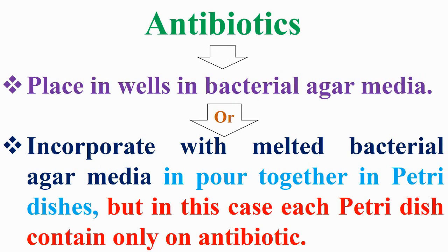The use of antibiotics in bacterial growth media is done by two ways: either placed in a well in bacterial agar media, or incorporated with melted bacterial agar media and poured together in petri dishes. In this case, each petri dish contains only one antibiotic.